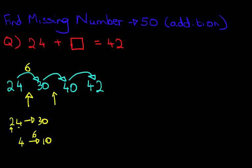Now, 30 to 40, well, that's quite easy. That's 10. And 40 to 42 is 2. Now, we can add these three numbers together, and we'll get our answer.